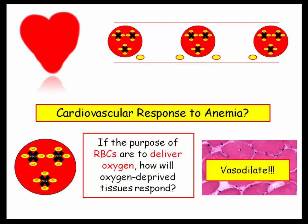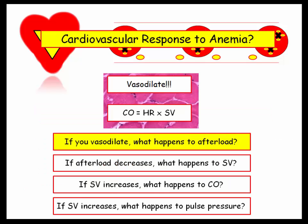Tissues need oxygen. So what does vasodilation do to the stroke volume? If you appreciate that decreased oxygen delivery results in vasodilation, and you think about the cardiac output formula, it is easy to determine how the body will respond to anemia. If you vasodilate, what happens to afterload? If afterload decreases, what happens to stroke volume? If stroke volume increases, what happens to cardiac output?